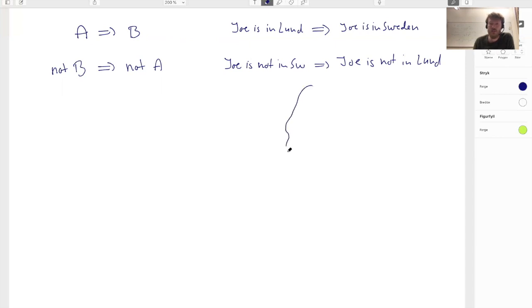If we look at a map, we can make sense of this. Let's say that Sweden looks like this, and Lund is somewhere here. In the first statement, we have to prove that if you're inside of this dot, then you're inside of Sweden. The second one says that if you're not inside of Sweden, then you're not in this dot. If you think of this in terms of set theory, it makes sense that these two statements are logically the same.